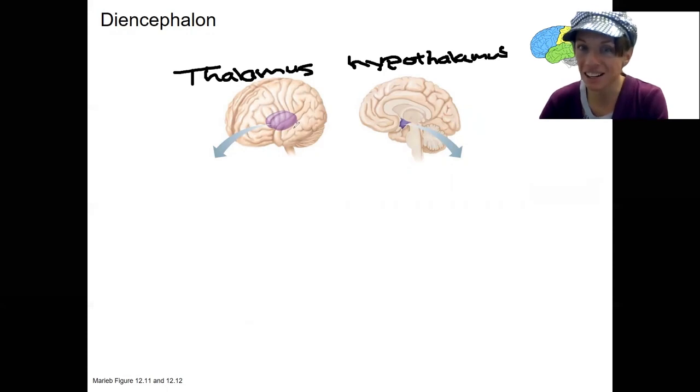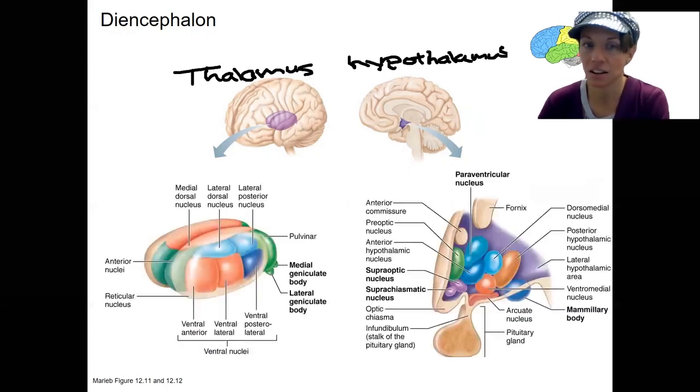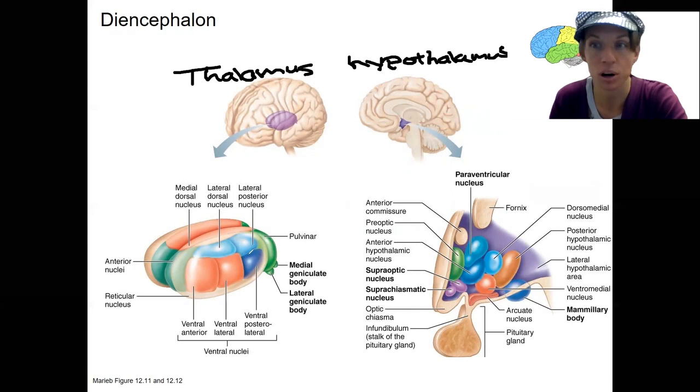Here we go. We zoom into the thalamus. There are separate nuclei in the thalamus. What this means is there are collections of cell bodies that are in charge of processing different types of information. So, for example, the lateral geniculate nucleus or body is back here.